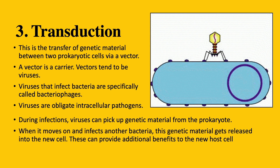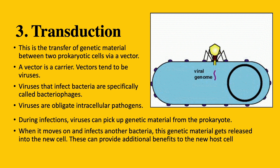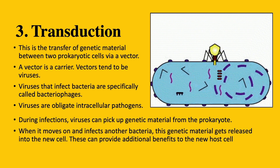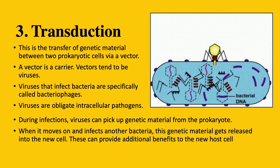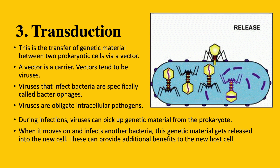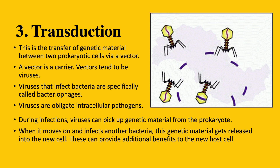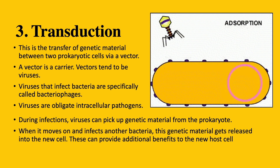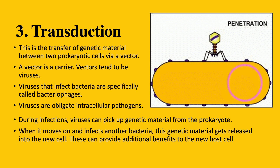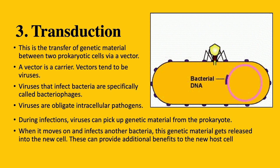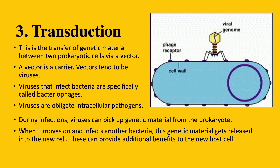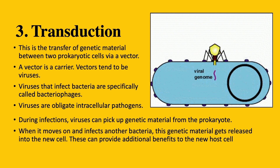Number three: transduction. Transduction is the transfer of genetic material between two prokaryotic cells via a vector — a carrier. In transduction, vectors tend to be viruses that infect bacteria, which have a specific name: bacteriophages. Viruses are obligate intracellular pathogens, meaning they can only live and reproduce inside a host cell. During this process, viruses can pick up genetic materials from a prokaryotic cell they infect, so when they move on and infect another cell, this genetic material gets released into the new cell and can provide additional benefits to the new host. This entire process is clearly and simply explained by the video shown on screen.